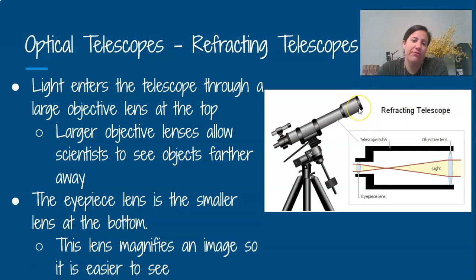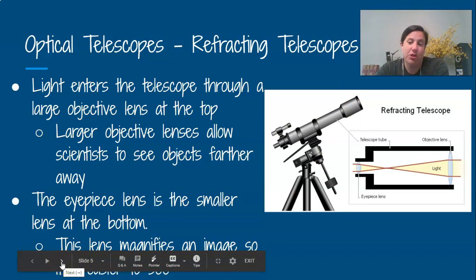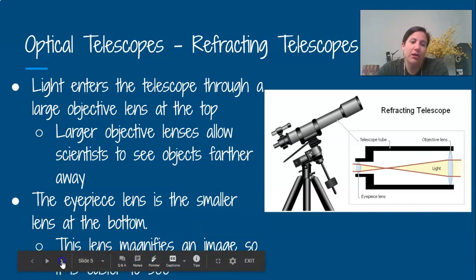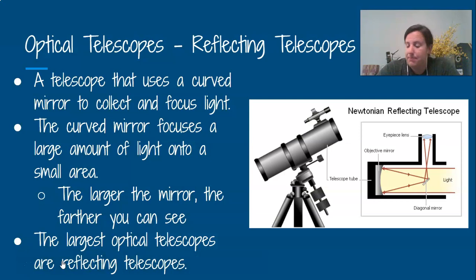So like I said, the bigger the lens up here, the farther in the space they can see. So that's a refracting telescope because refraction means bending the light. So we're bending the light and focusing it on a smaller area, and then that eyepiece magnifies it.